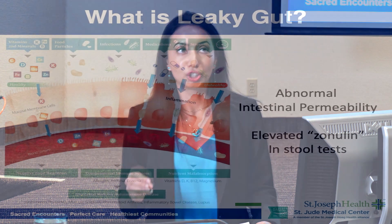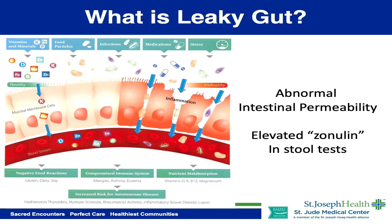Let's talk about leaky gut. Leaky gut is also known as abnormal intestinal permeability. The lining of our GI tract is actually only one cell layer thick, and the cells that line your gut are called enterocytes. It was designed this way to make it easy for us to absorb nutrients from our gut.